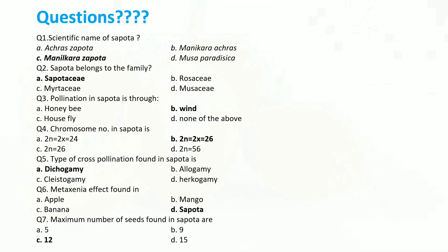Here are some questions. Question 1: Scientific name of Spotter. Answer: Malenkira Spotter. Question 2: Spotter belongs to the family — Answer: Spottaceae. Question 3: Pollination in Spotter is through — Answer: Wind. Question 4: Chromosome number in Spotter is — Answer: 2n = 2x = 26. Question 5: Type of cross pollination found in Spotter is — Answer: Dichogamy. Question 6: Mataxina affect is found in — Answer: Spotter.